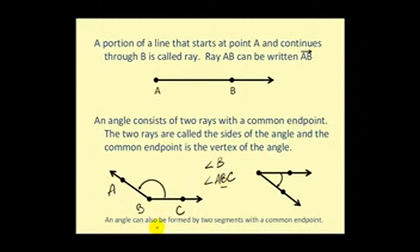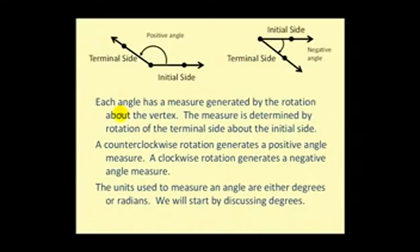Now it is true that an angle can also be formed by two segments with a common endpoint. Each angle has a measure generated by the rotation about the vertex. The measure is determined by the rotation of the terminal side about the initial side. So here's our initial side and the second ray, or the terminal side, has been rotated to this position.